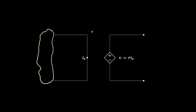It's also possible for the voltage provided by a source to be a function of a current somewhere in the circuit. Again, we use a diamond symbol for the source, but in this case the voltage is a function of current, not another voltage. For a current-controlled voltage source, the most common situation is for the source voltage to be proportional to the current, with proportionality factor R. For example, if R equals 2 and I sub S equals 3 amps, then we would have a voltage of 6 volts for this current-controlled voltage source. The proportionality constant must have units of volts per amp.